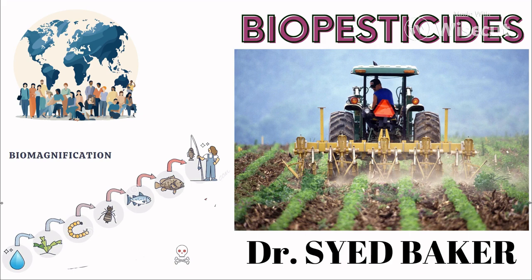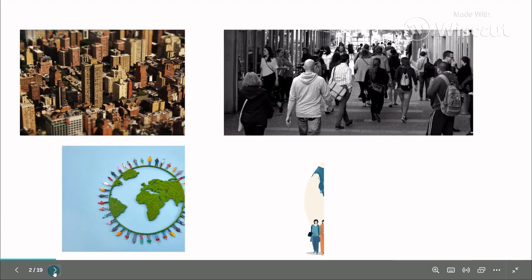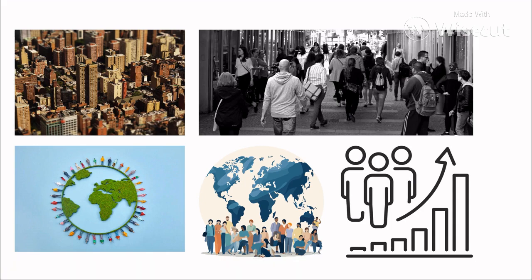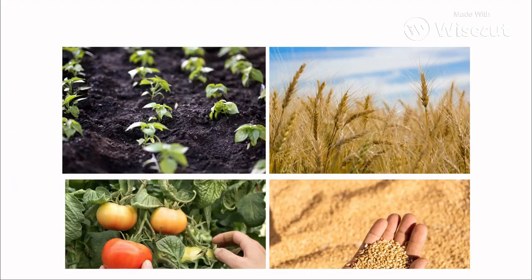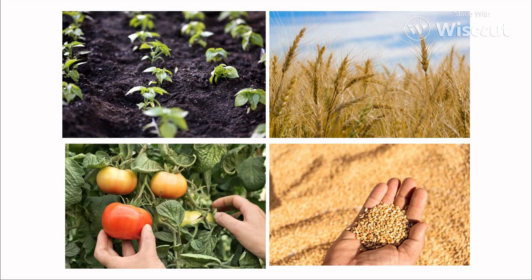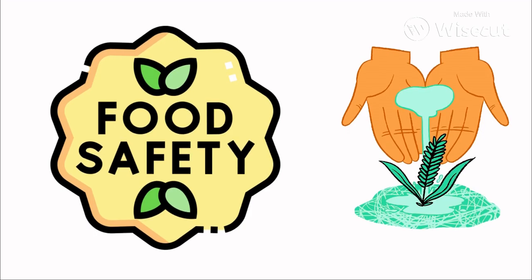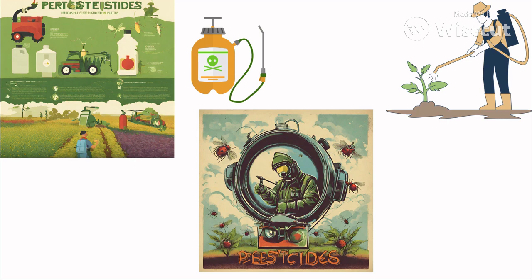As the world population is increasing day by day, there is a great demand for food cultivation. In order to meet global food safety and security, the farming community is forced to use pesticides. These pesticides might be in the form of fungicides, insecticides, or herbicides in order to improve crop productivity.